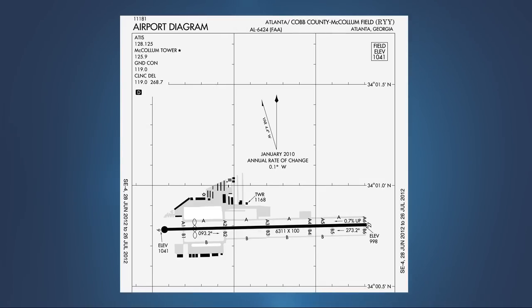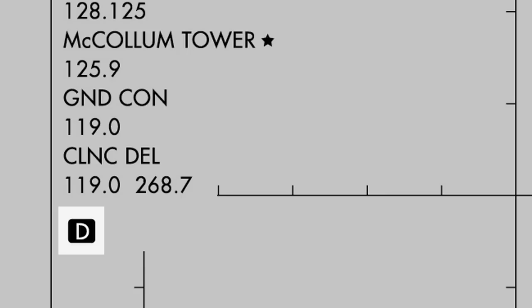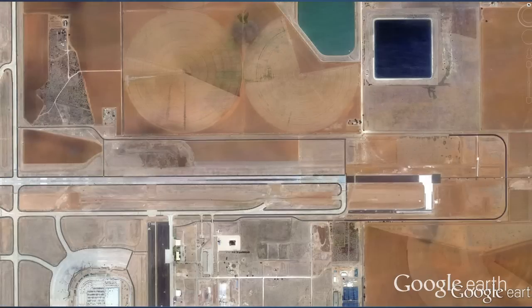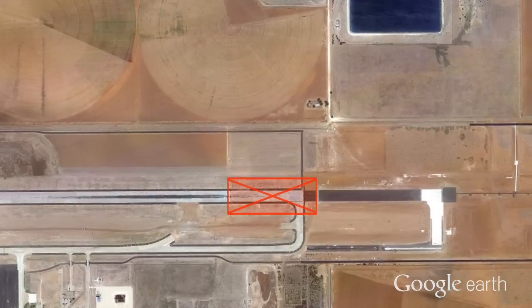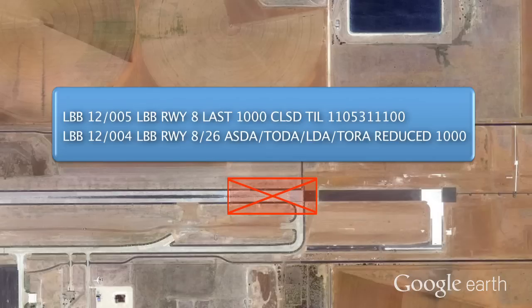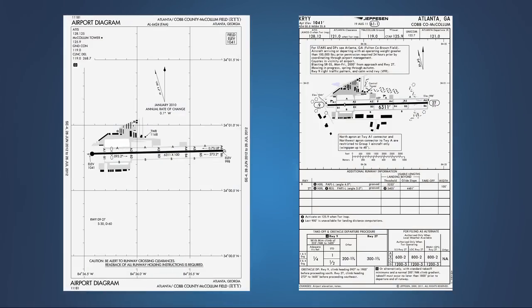Pilots who use U.S. government instrument approach charts and airport diagrams may recognize the inverse D graphic symbol. This symbol is also used to inform operators that there are declared distances established for one or more runways for this airport. The pilot should consult the FAA Airport Facility Directory to obtain these distances. Temporary partial runway closures, such as this example from Lubbock, Texas, may include a notice to airmen reporting revised distances. Pilots must be aware that the runway length stored in the navigation database of the GPS or flight management system may not reflect the runway's declared distance.